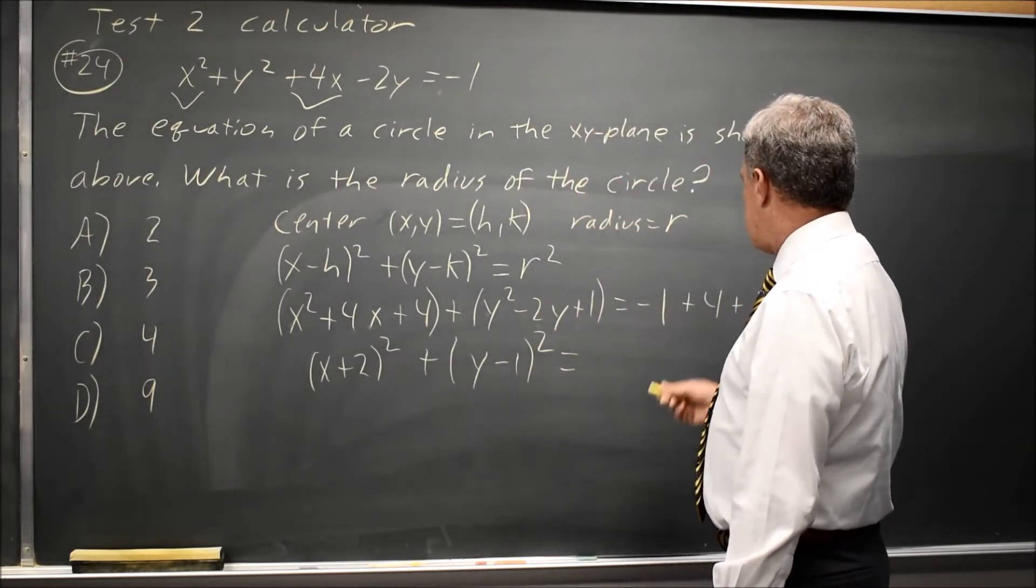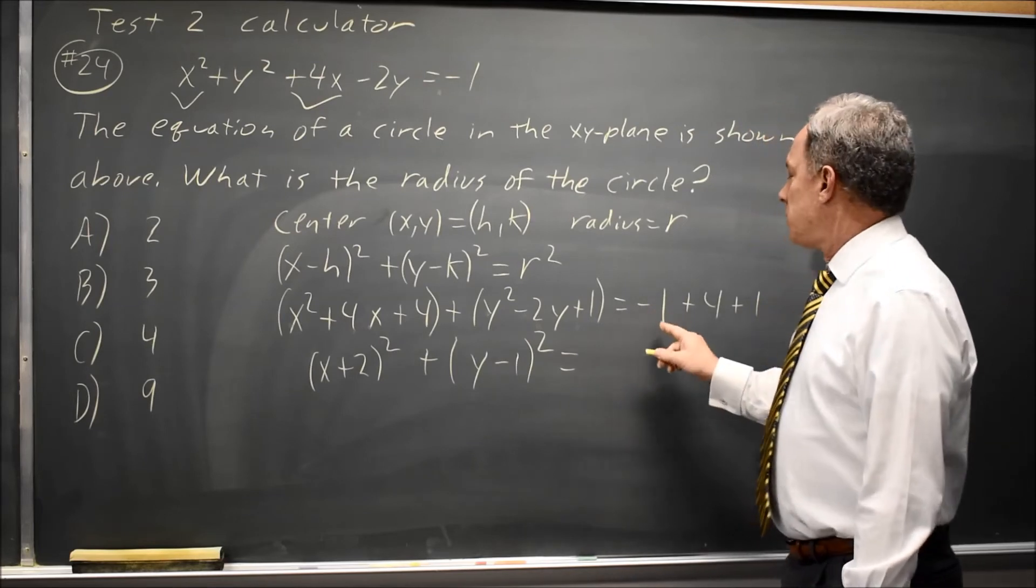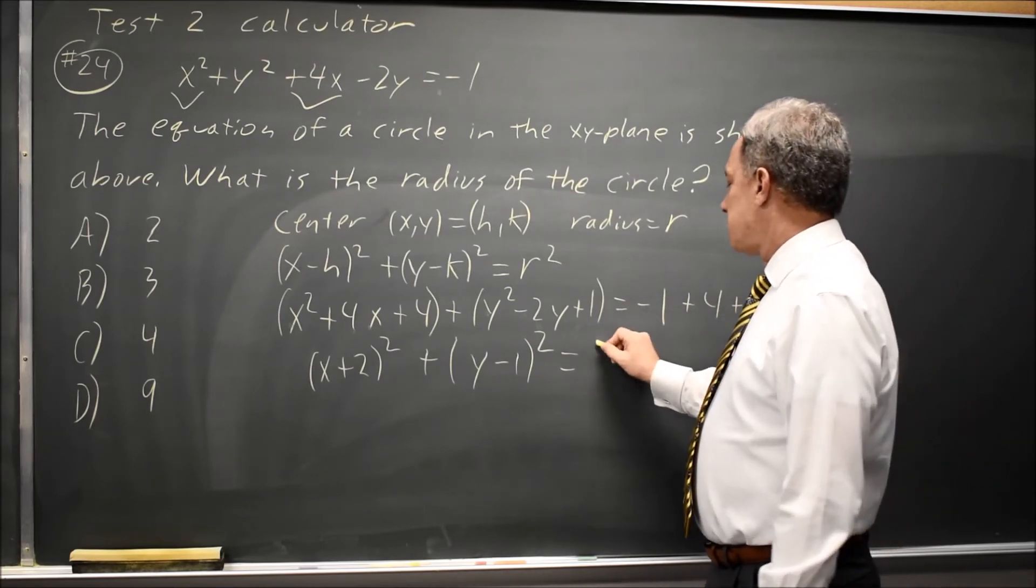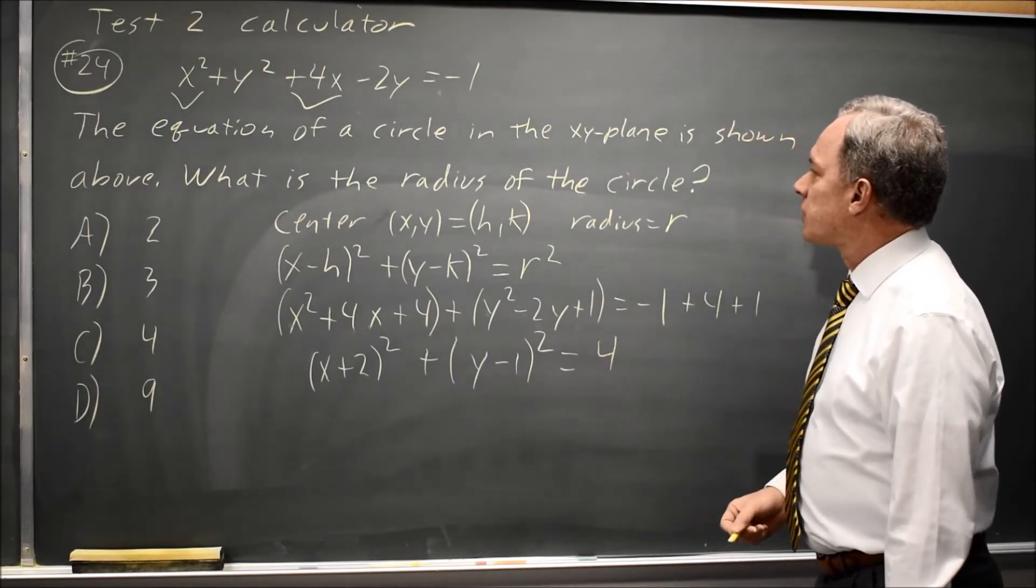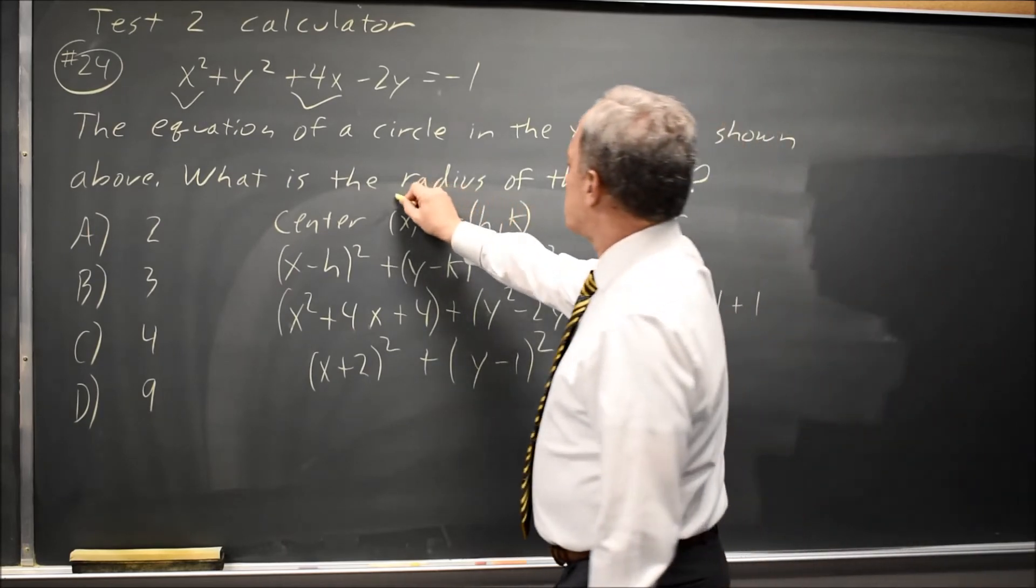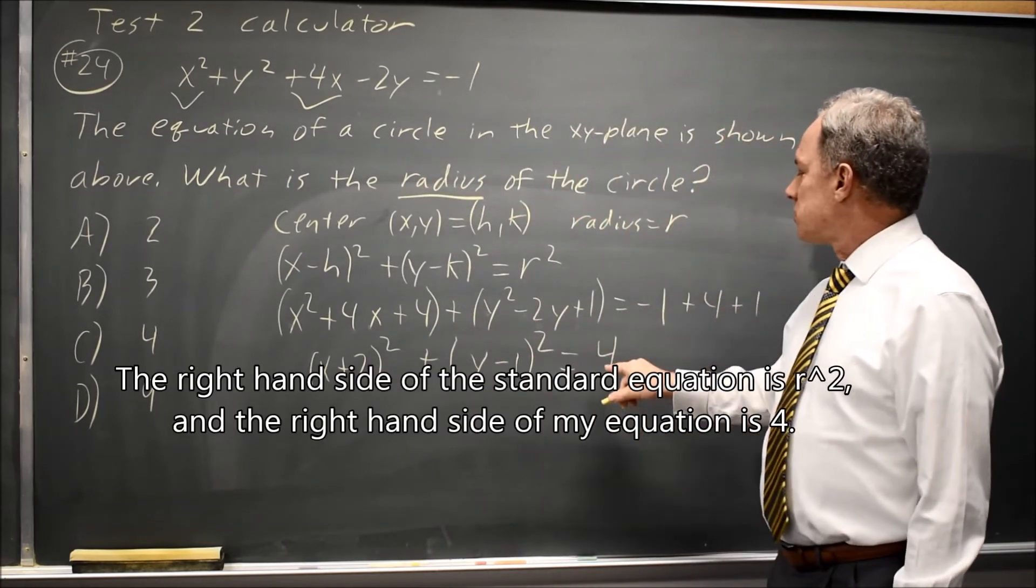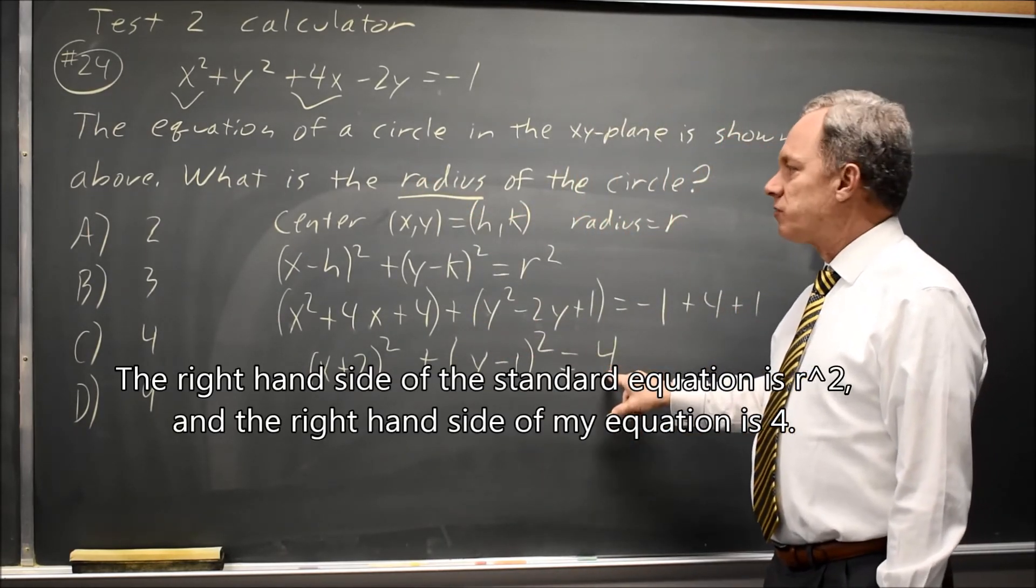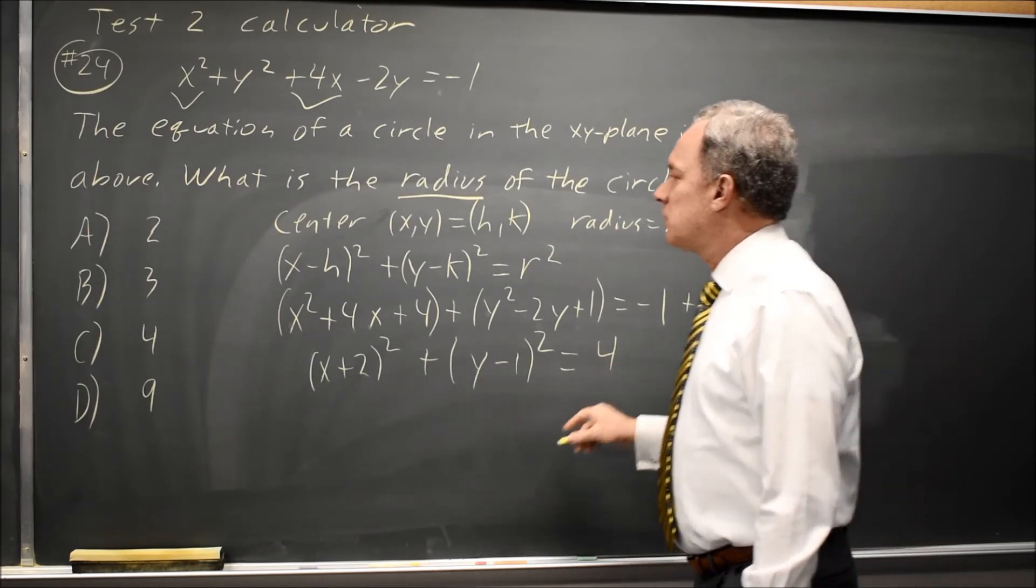And adding the constant on my right, negative 1 plus 4 plus 1 is positive 4. They're asking about the radius of the circle. r squared is 4, so r, the radius, is the square root of 4, which is 2.